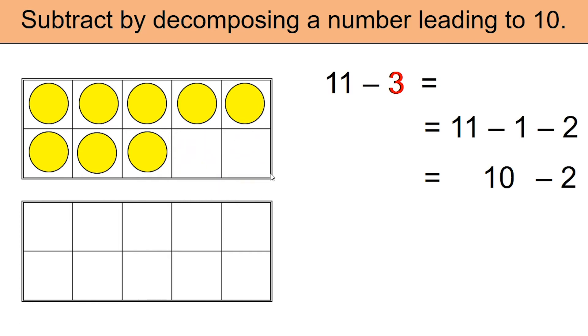Once they are removed from the frame, as you can see we are now left with 8. 11 minus 3 is equal to 8.